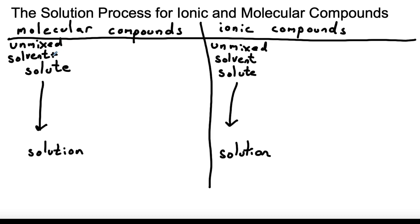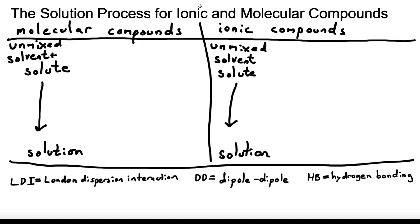When doing this analysis, we have to keep in mind the IMFs that are holding together different molecules in the solvent and in the solute, and then see how those are replaced, in part, by interactions between solute and solvent in the solution. That's true for both dissolving molecular compounds and dissolving ionic compounds. Let's write down those IMFs. To save space, let's use some abbreviations: for London dispersion interactions, we'll use LDI; for dipole-dipole interactions, DD; and for hydrogen bonding, HB.